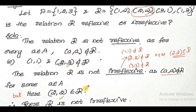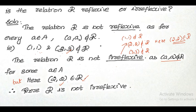So, not irreflexive means: since (2,2) is included in the relation, it is not irreflexive. This was a small example to illustrate the concept.